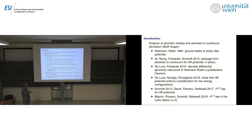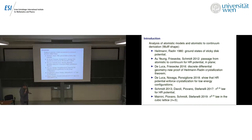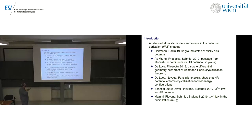Regarding atomistic models and atomistic-to-continuum derivations, the first paper I want to mention proved, under the assumption of the so-called sticky disk potential, that minimizers lie on the triangular lattice for every N. The second paper derives the first passage from atomistic to continuum under the assumption of the Heitmann-Radin potential, using the result that minimizers for each N should be on the triangular lattice. There is also a nice paper giving a different proof of the Heitmann-Radin crystallization theorem, introducing discrete differential geometry.